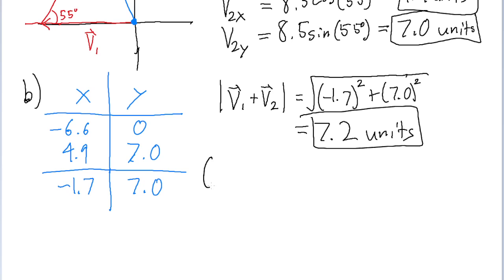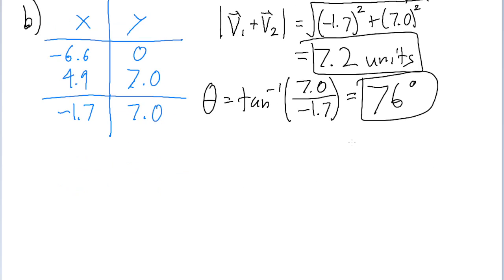We also want to find the angle. Recall that the angle equals the inverse tangent of the y-component divided by the x-component. That's the inverse tangent of 7 divided by negative 1.7, which gives us an angle of about 76 degrees. It should be noted that this angle is clockwise from the negative x-axis. It's important to clarify the actual direction of the angle. And that is it for this problem.